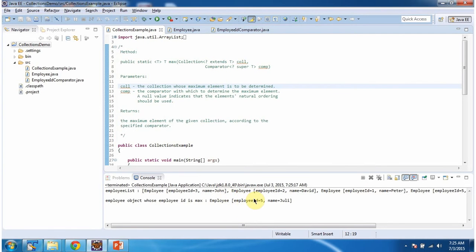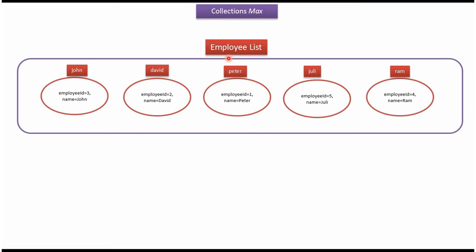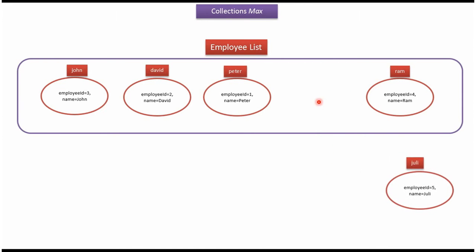This is the output of this sample program. In the employee list there are five employee objects: John, David, Peter, Julie, and Ram. From this list I want to get the employee object whose employee ID is max.